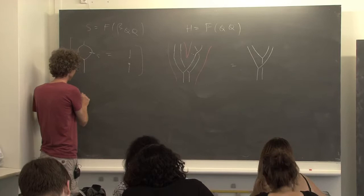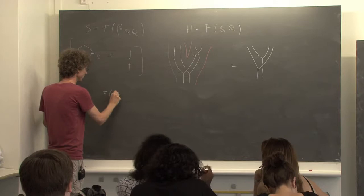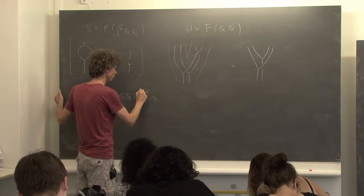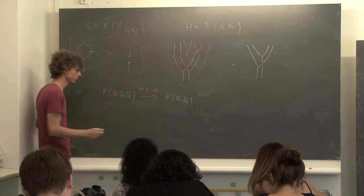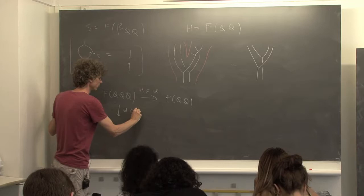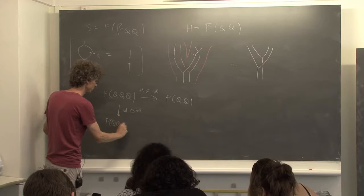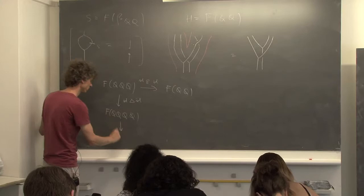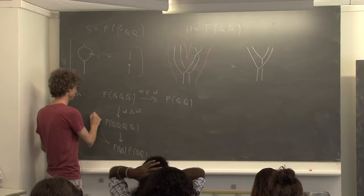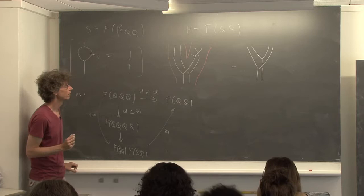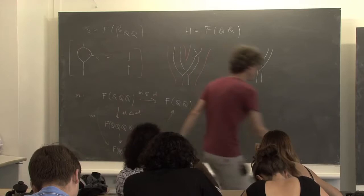Now we need to apply that product. The product was defined in this horror way. Let's recall what M was: the idea was to take F(Q tensor Q tensor Q), apply the co-unit in the middle to go to F(Q tensor Q), and this stuff was isomorphic to F(Q tensor Q) tensor F(Q tensor Q). How did it go? By first doing the co-product — going to F(Q tensor Q tensor Q tensor Q) — and then using the co-monoidal structure on F. This is an isomorphism, and M is this composition.